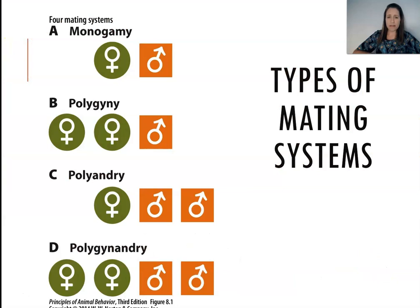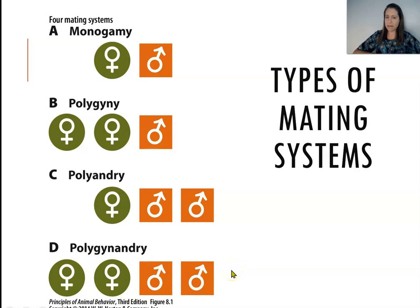If we consider all the different ways that animals can reproduce in terms of males and females coming together, there are four basic patterns that we see. We can have monogamous mating systems that include one female with one male. We can have polygynous mating systems in which we have one male and many females. We can have polyandrous mating systems where we have one female and many males. Or we can see promiscuity or polygynandry where we see multiple females and multiple males. We see examples of all of these across all the different taxa.